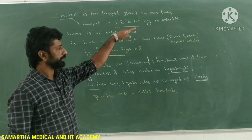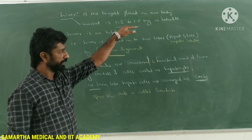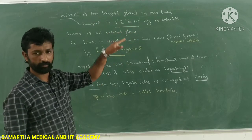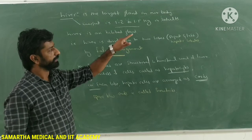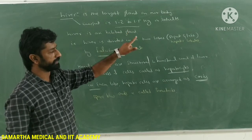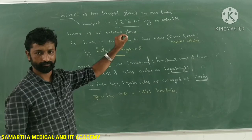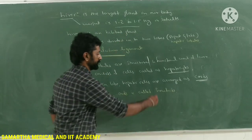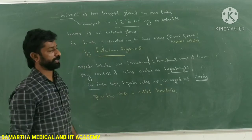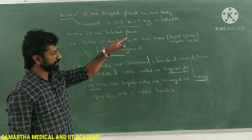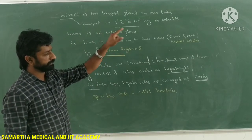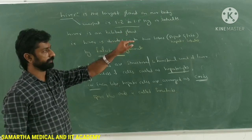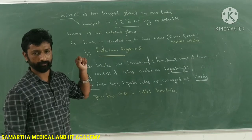In the diagram you can see the presence of hepatocytes in the form of hepatic cords, and in between the cords there is a space present — that space is called a sinusoid. The hepatocytes secrete bile into the space present within the cord itself, which is called the canaliculi.